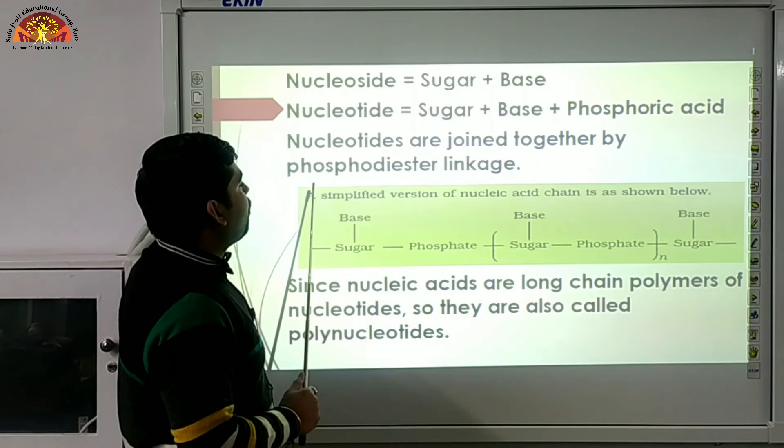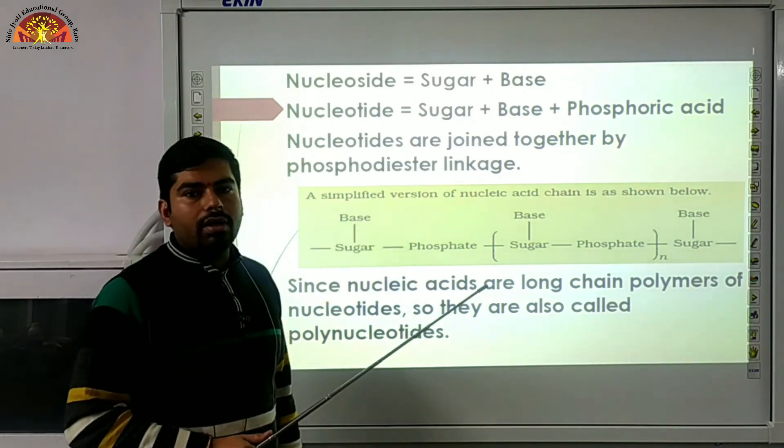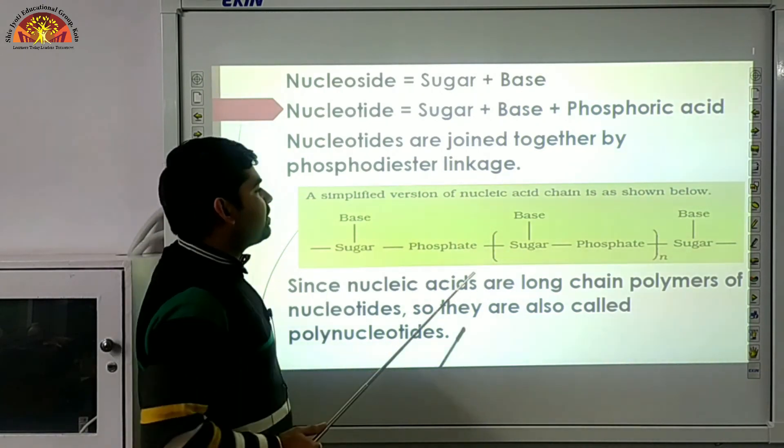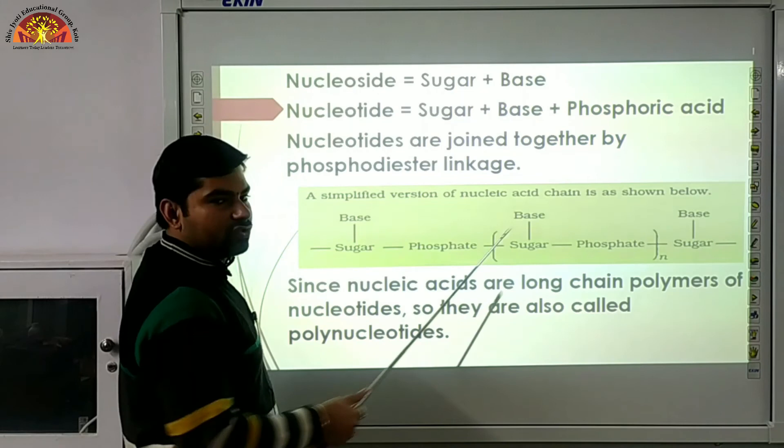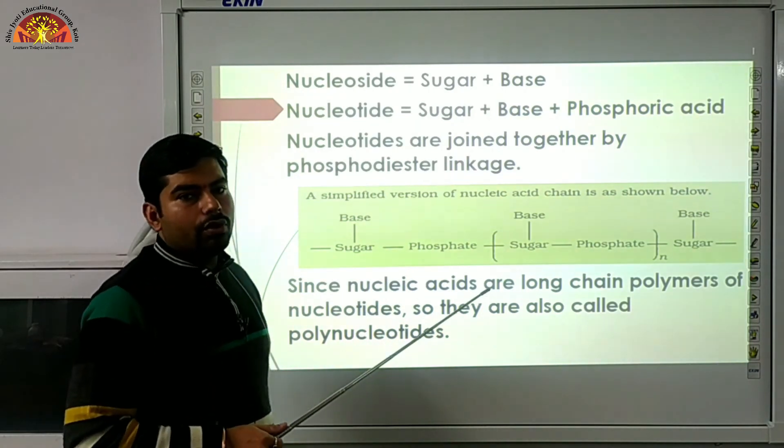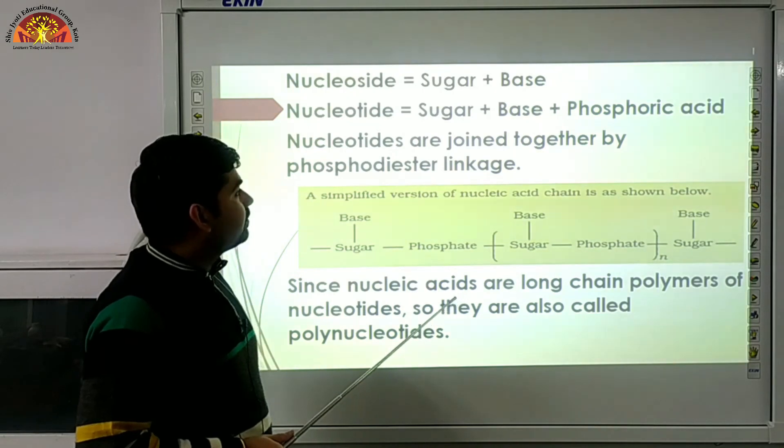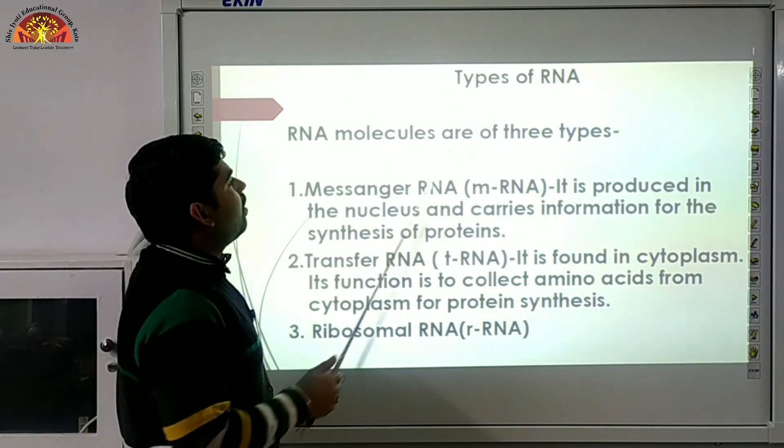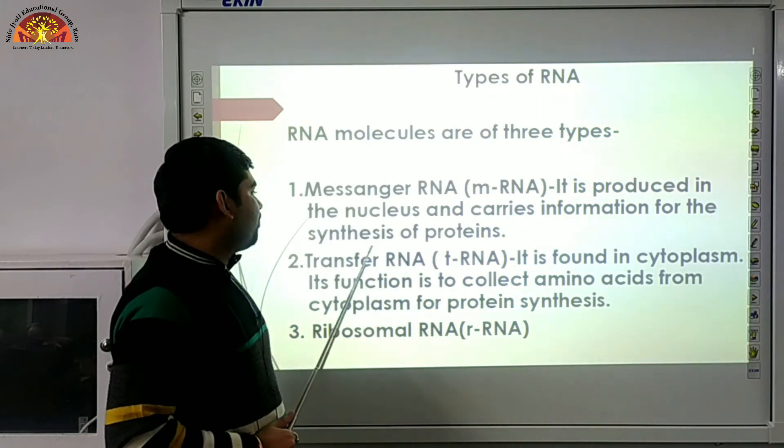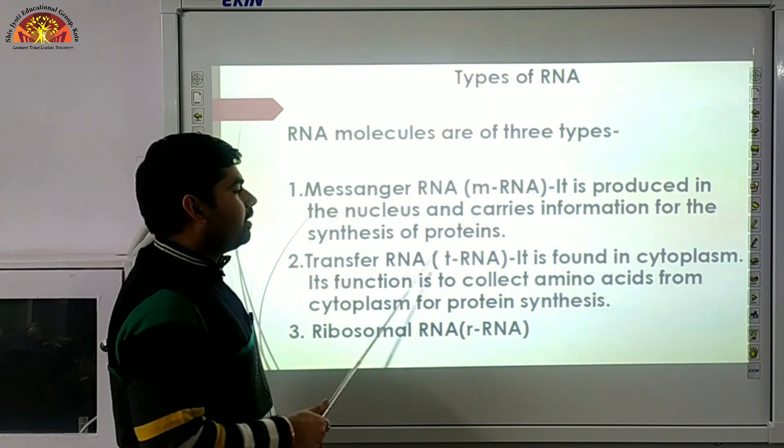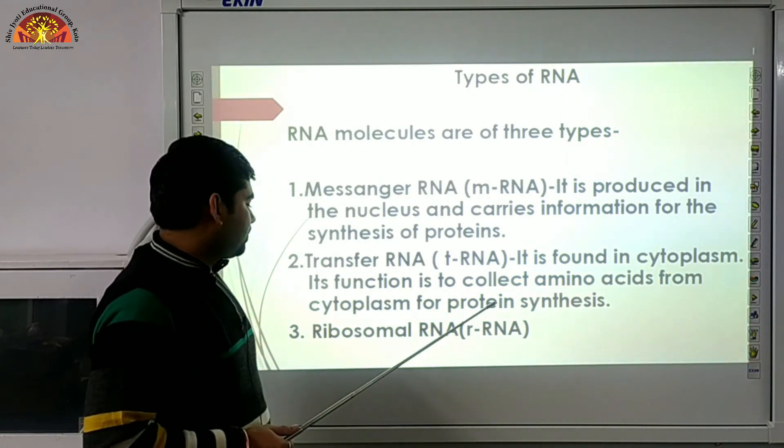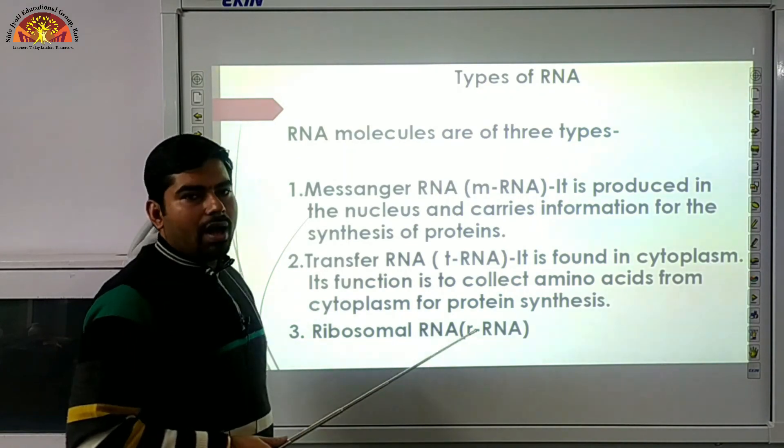Now sugar plus base gives nucleoside, and sugar plus base plus phosphoric acid gives nucleotide formation. Nucleotides are joined together by the phosphodiester linkage. Since nucleic acids are long chain polymers of nucleotides, they are also called polynucleotides. Types of RNA - RNA molecules are of three types. Number one, messenger RNA, m-RNA - it is produced in the nucleus and carries information for the synthesis of proteins. Transfer RNA, t-RNA - it is found in cytoplasm. Its function is to collect amino acids from the cytoplasm for protein synthesis. And number third, ribosomal RNA, r-RNA.